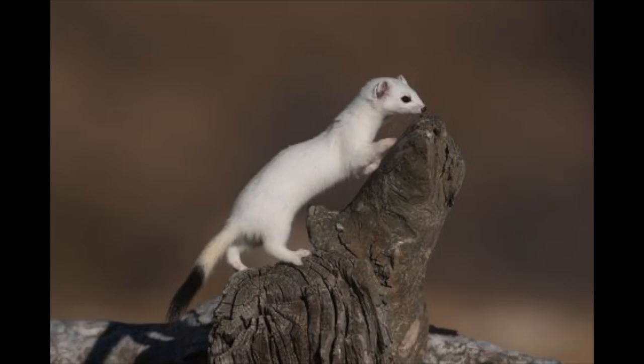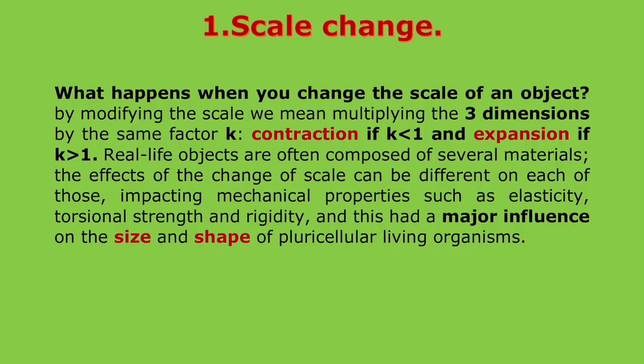Point one: what happens when you change the scale of an object? By modifying the scale, we mean multiplying the three dimensions by the same factor k — contraction if k is less than one, expansion if k is larger than one. Real-life objects are often composed of several materials, and the effect of the change of scale can differ according to the material, impacting mechanical properties such as elasticity, torsional strength, and rigidity. This had a major influence on the size and shape of multicellular living organisms.